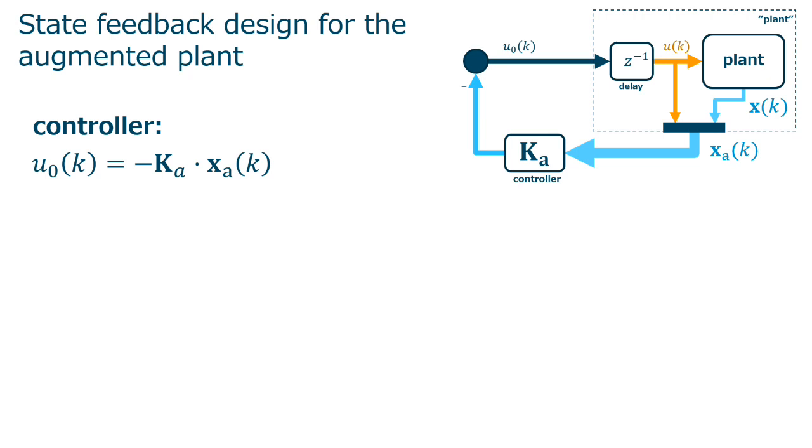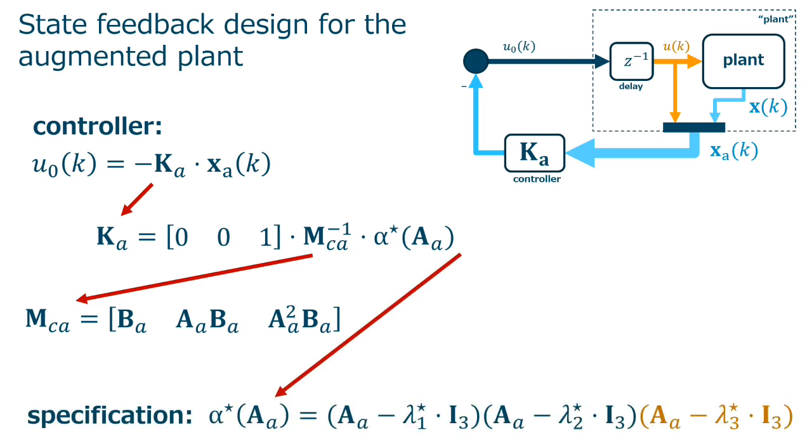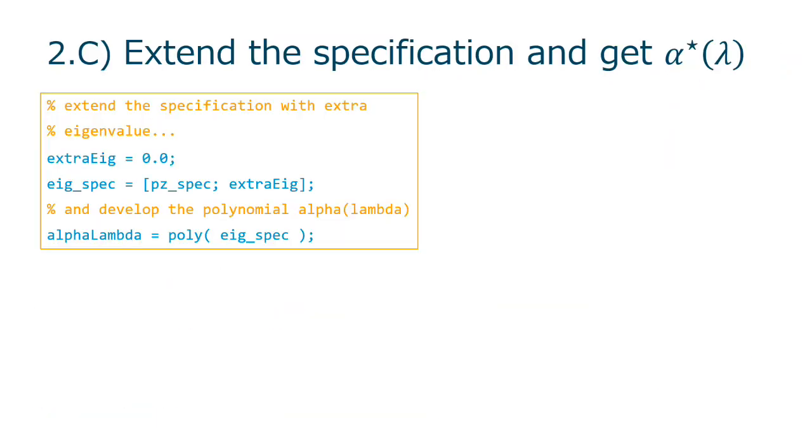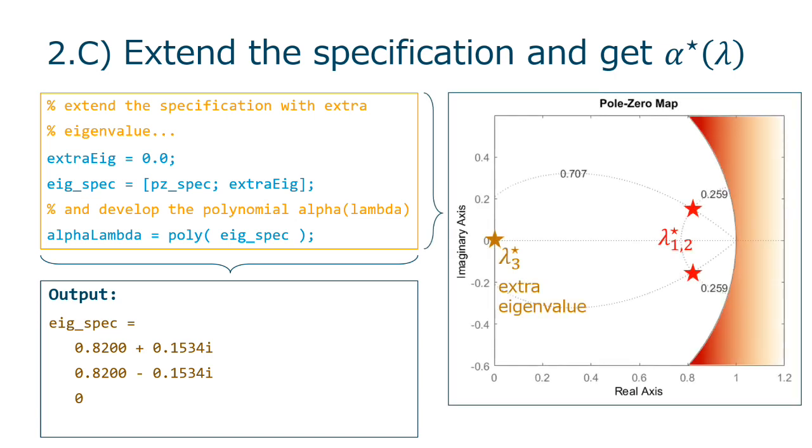At this point, we recall the supporting theory and Ackermann's formula, where MCA is the controllability matrix that should be non-singular so we can invert it, and the specification polynomial alpha, with an extra eigenvalue as we have augmented the plant for a third-order system. We use the command poly to develop the polynomial from the specified roots, after extending them with an extra eigenvalue. I've put it to zero, but you can use this extra knob to optimize your controller.